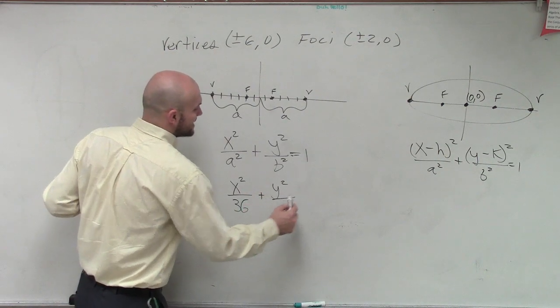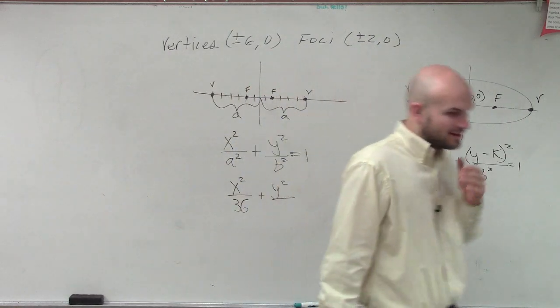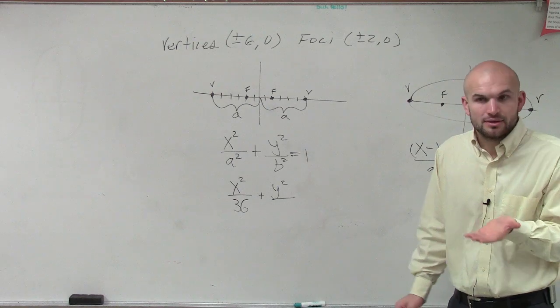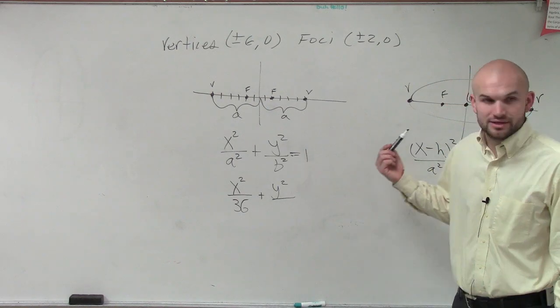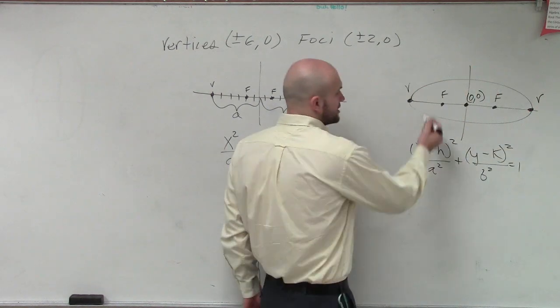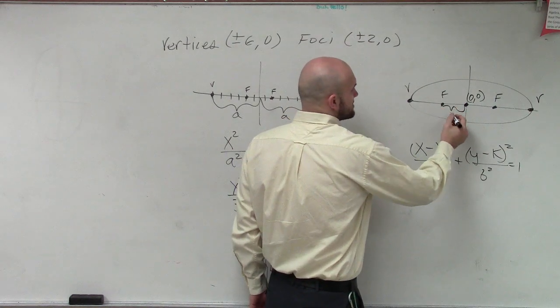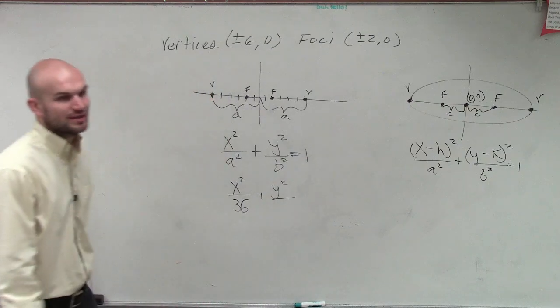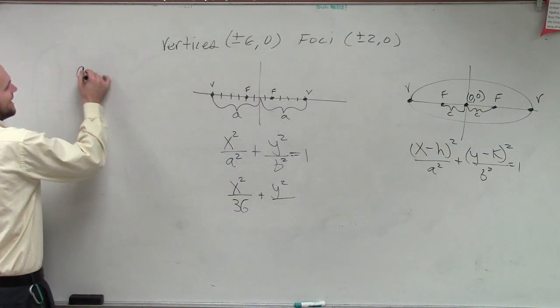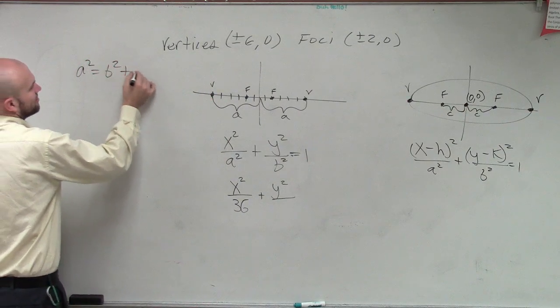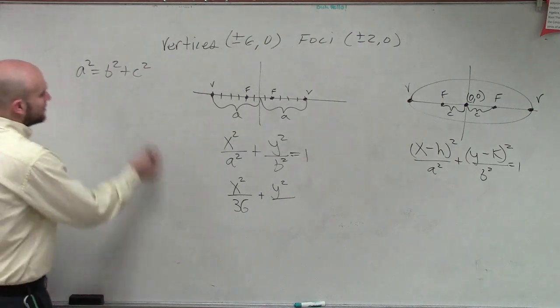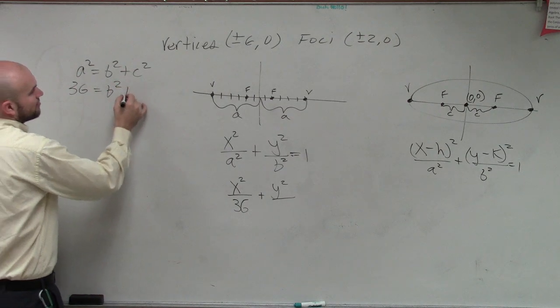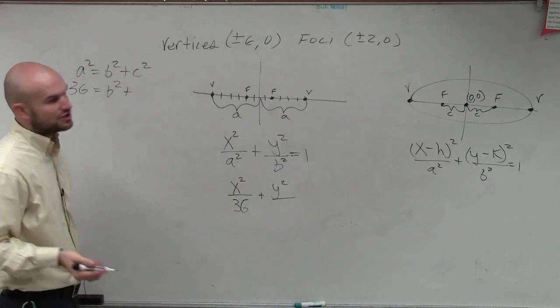So, now we have y squared over b squared. Now, our problem is we don't know what b squared is, right? But the other information they gave us was they gave us c. And remember, we talked about a, b, and c are related to each other where we can say a squared equals b squared plus c squared. So, if I know a squared is 36 equals b squared plus c squared. So, c is 2. So, c squared is going to be 4 minus 4.